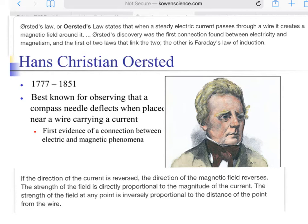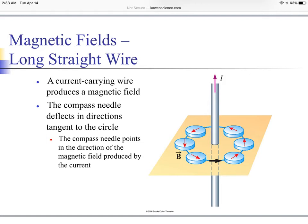The strength of the field is directly proportional to the magnitude of the current, and the strength of the field at any point is inversely proportional to the distance of that point from the wire. Here we can see that if we place a compass around the wire, it would be deflected in the direction tangential to the circle, ultimately producing this circular drawing that shows the direction of the magnetic field being produced by the current.